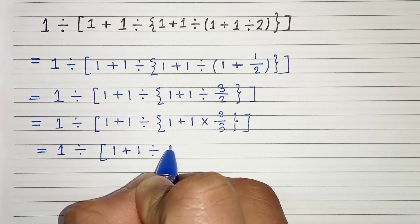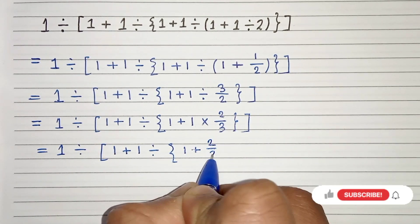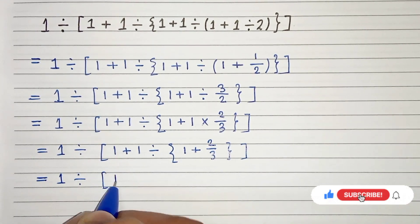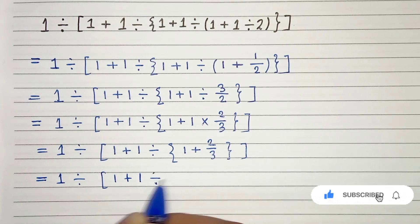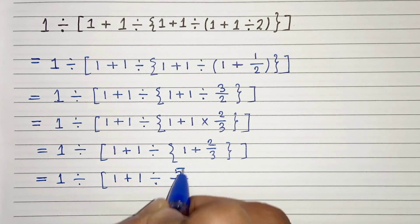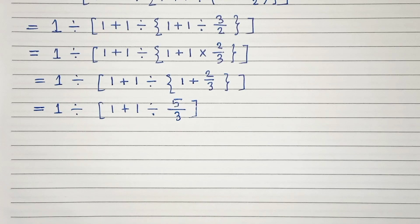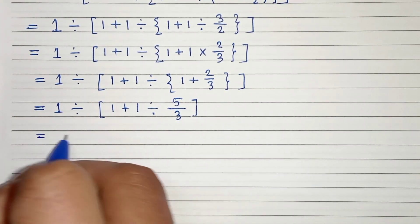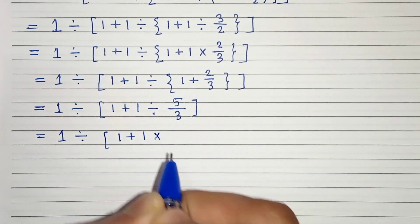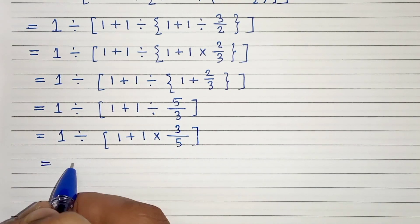In the next step: 1 divided by 1 plus 1 divided by 1 plus 2 by 3. Now 1 plus 2 by 3 equals 3 times 1 plus 2 over 3, which is 5 by 3. In the next step, 1 divided by 1 plus 1 divided by — division written as multiplication, so 5 by 3 becomes 3 by 5.